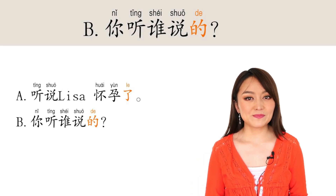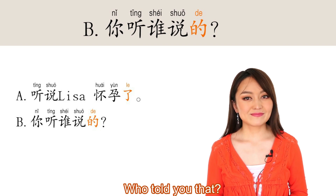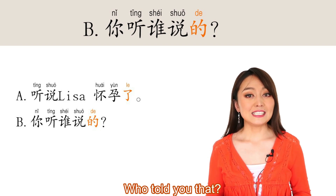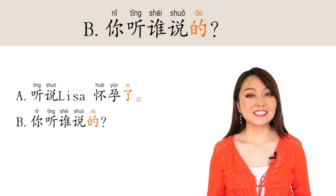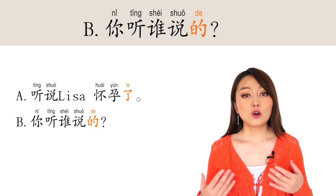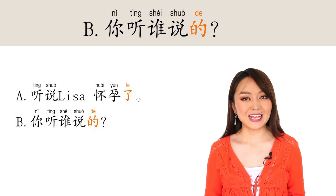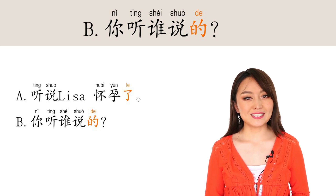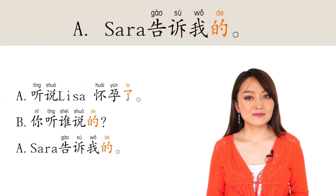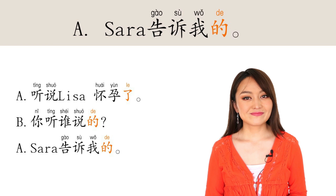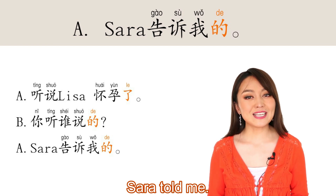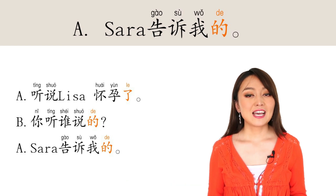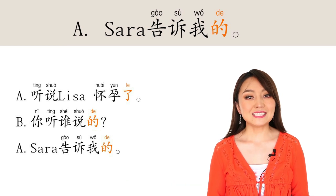And B says: 你听谁说的? — Who told you that? Now we use 得, and the conversation goes on to ask the detail: who told you that? And A answers: Sarah 告诉我的 — Sarah told me. Still we use 得 to tell further detail.